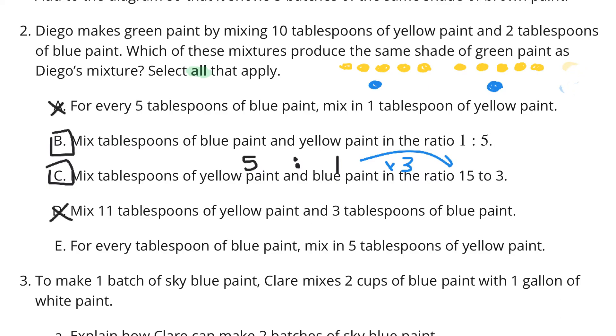What about E? For every tablespoon of blue paint, mix in five tablespoons of yellow. Every tablespoon of blue, mix in five yellow. Every tablespoon of blue, five yellow. That is true. So, E works. So, B, C, and E are our solutions.